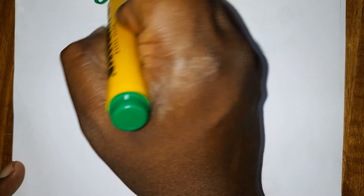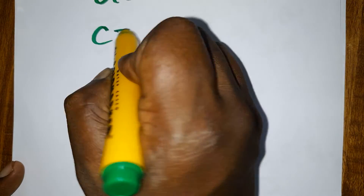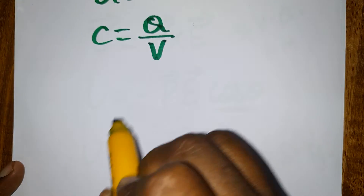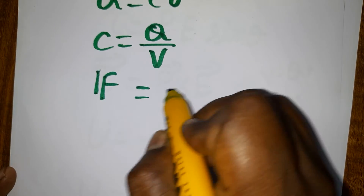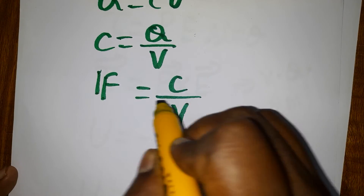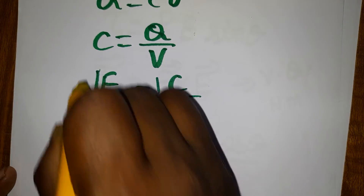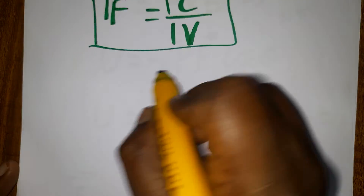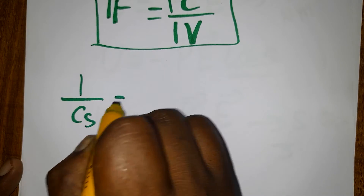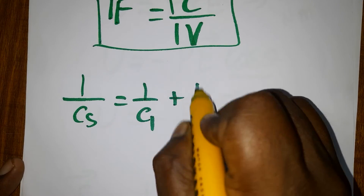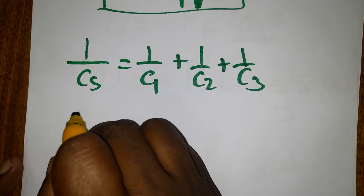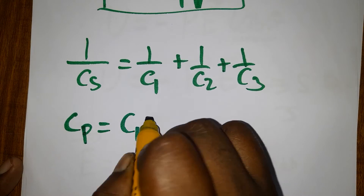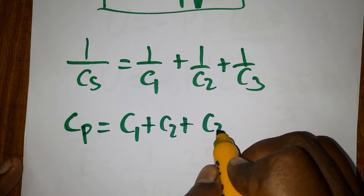For capacitance of a capacitor: Q = CV, so C = Q/V. The unit of C is farad, charge is coulombs, and voltage is volts — one farad equals one coulomb per volt. For capacitors in series: 1/C_s = 1/C1 + 1/C2 + 1/C3. For capacitors in parallel: C_p = C1 + C2 + C3.